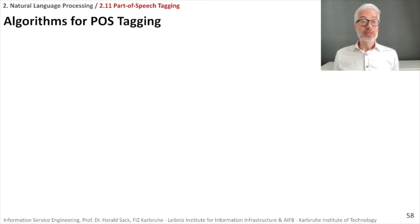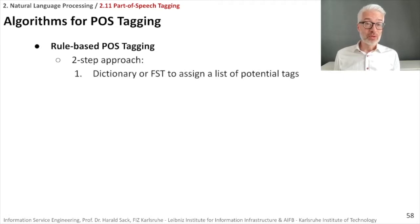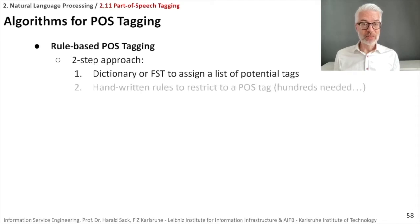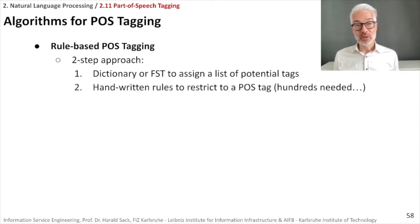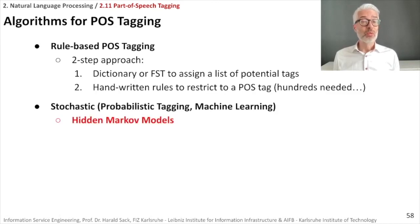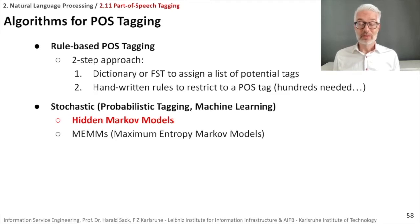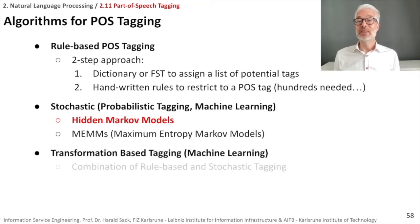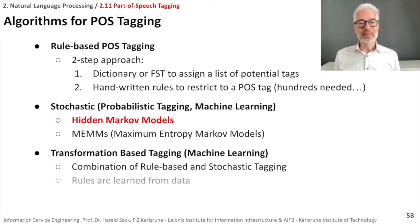POS tagging algorithms fall into several types. Rule-based taggers use a two-step approach: a dictionary or finite-state transducer assigns a list of potential tags, then handwritten rules restrict to a specific tag — but hundreds of manually crafted rules are needed. Stochastic/probabilistic methods include hidden Markov models and maximum entropy Markov models. Transformation-based tagging combines rule-based and stochastic approaches, learning rules from data using machine learning.